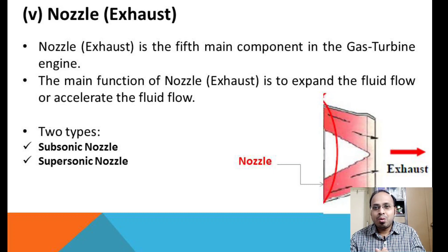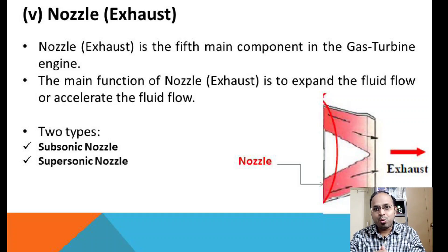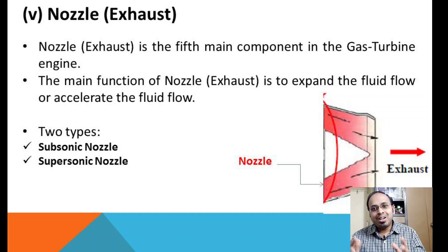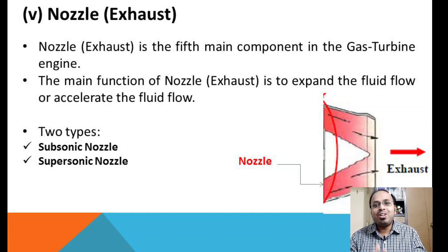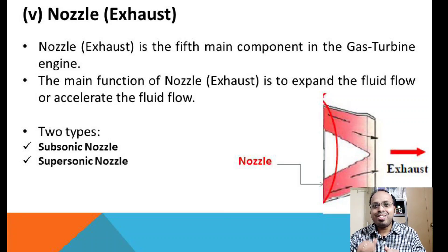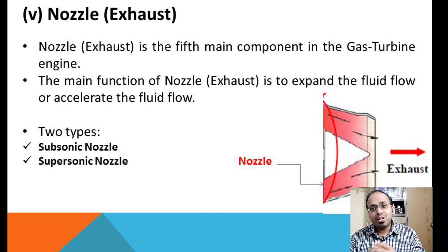The turbine partially expands the flow, but the nozzle expands it fully. This causes the flow to leave the engine at very high velocity, producing a reaction in the opposite direction — which is called thrust. This is the thrust we study in propulsion systems. There are two types of nozzles: subsonic and supersonic.